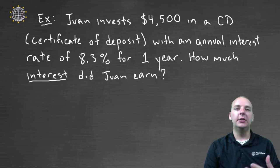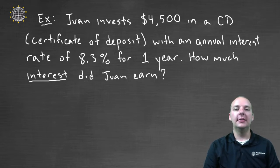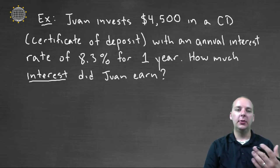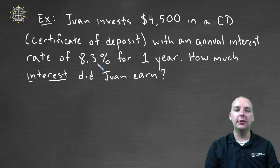Let's look at a basic interest problem. A person named Juan invests $4,500 in a CD — a certificate of deposit. This is a common investment where you take an amount of money, put it in for a fixed period of time, and get paid a certain amount of interest. It's very straightforward, which is why it's popular in algebra class examples. Our CD has an annual interest rate of 8.3%, and we're going to invest that $4,500 for one year. So how much interest did Juan earn on his CD?